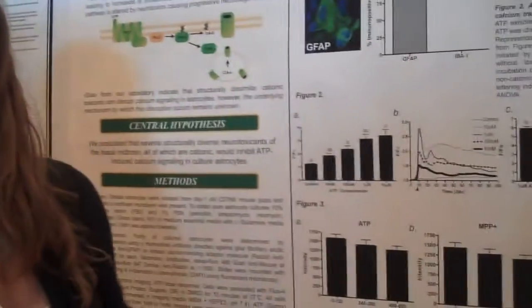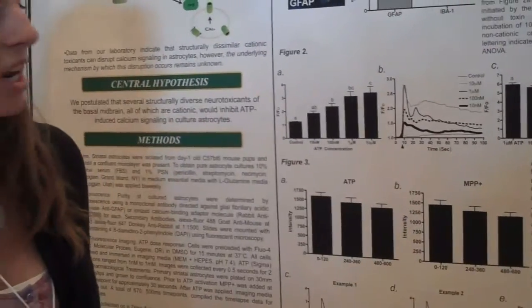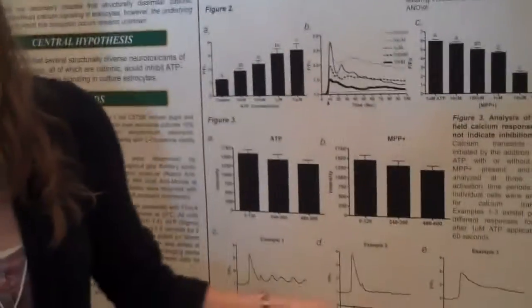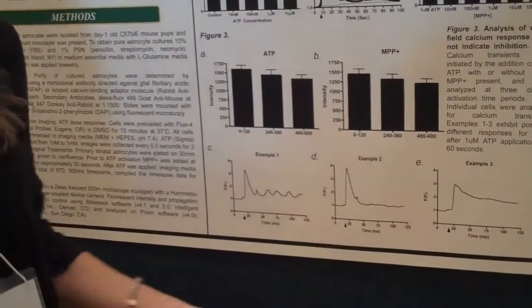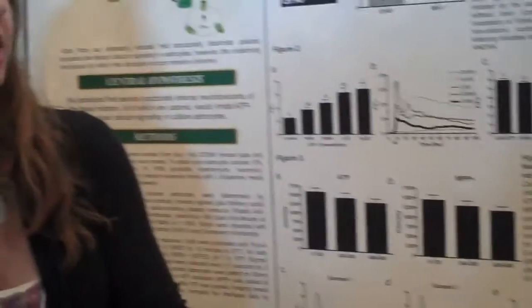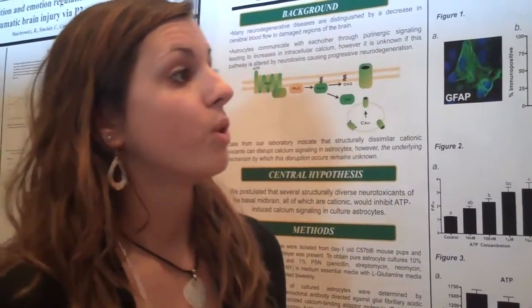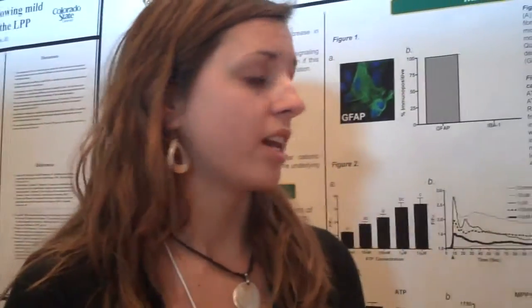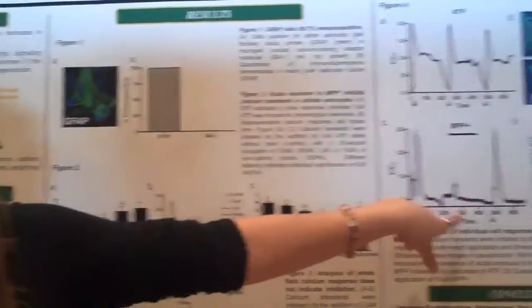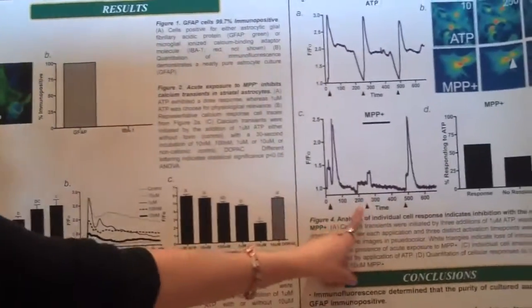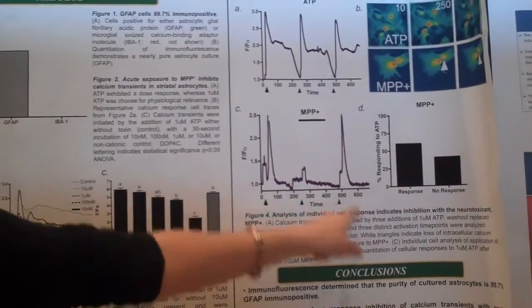These are three representative cell traces from ATP application. You can see that each cell elicits a different response with ATP, suggesting that different astrocytes give different responses. When we analyzed the cells on an individual cell basis, we found that MPP Plus does inhibit ATP application — MPP Plus is added and ATP response decreased significantly.